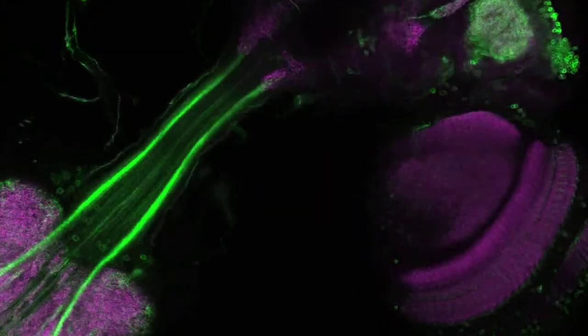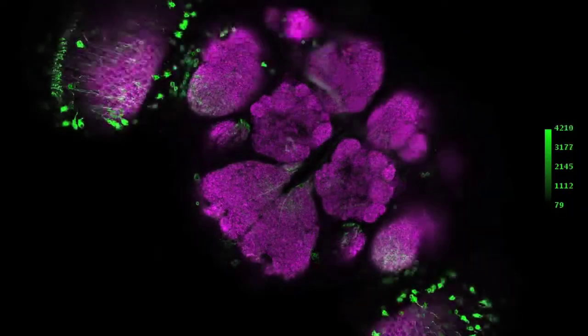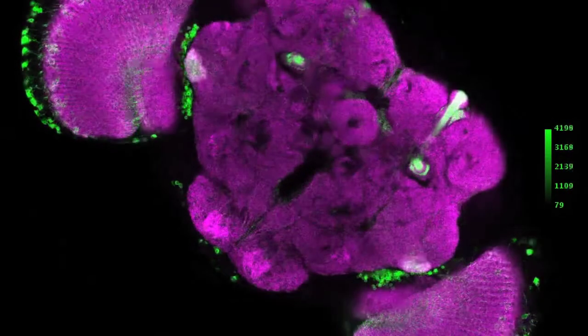We've identified where in the brain we think that they make connections, and we're making what we call reagents, which are individual fly lines that have expression just in a single one of these descending neurons. That's about 180 different fly lines or different cells that we can drive individually to see what they do.